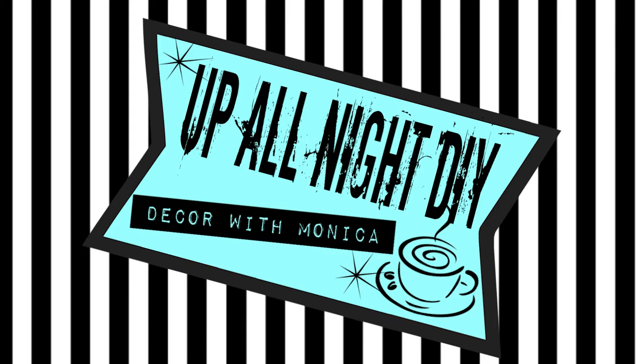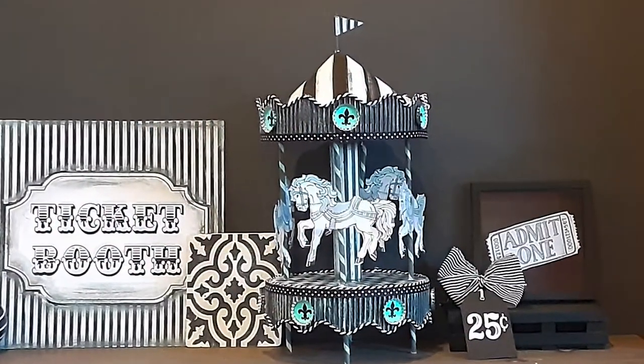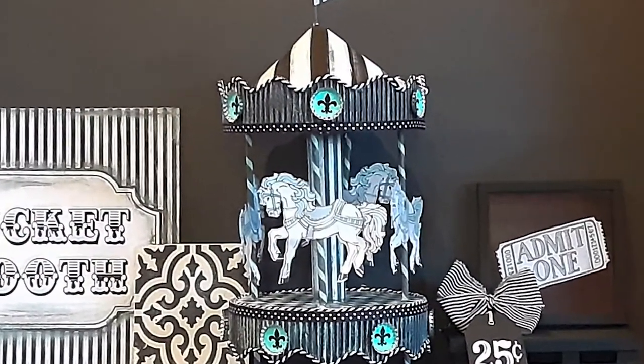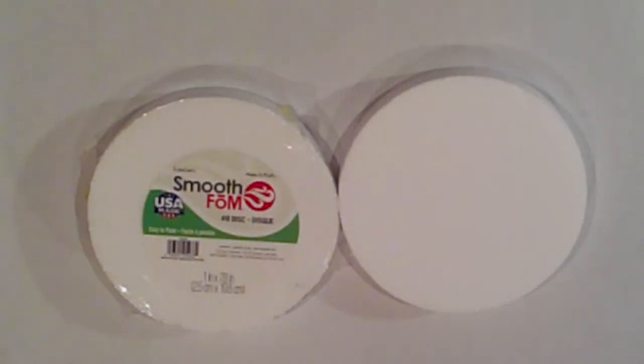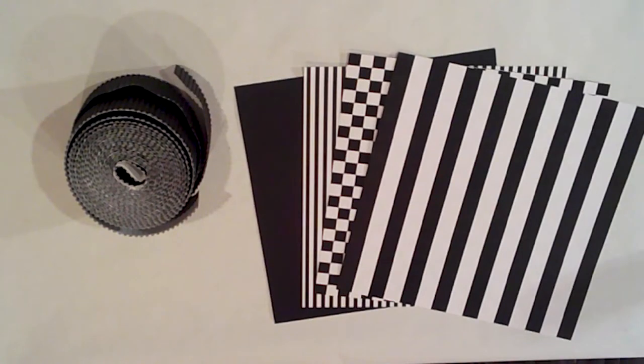Hey everyone, welcome to Up All Night DIY. I'm Monica, thanks for joining me today. I'm making this really cute carousel with items from my stash. I'll be using two styrofoam discs, some patterned paper, cardstock, and corrugated cardboard trim.